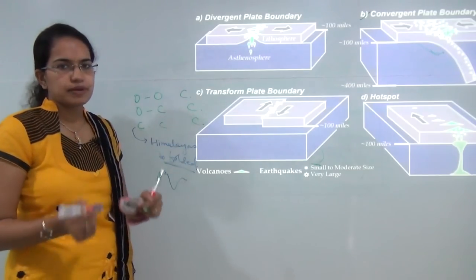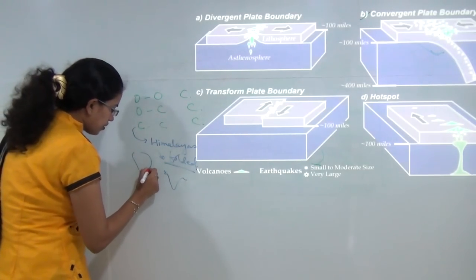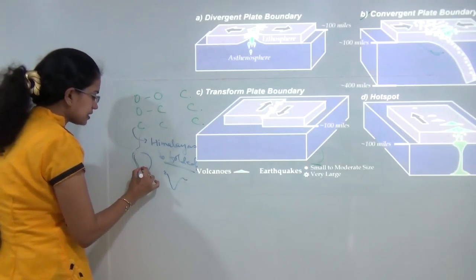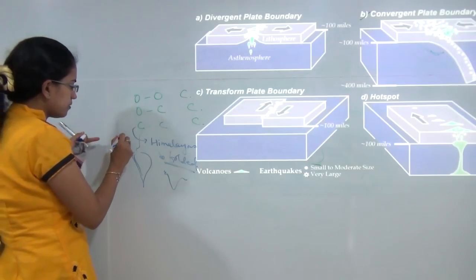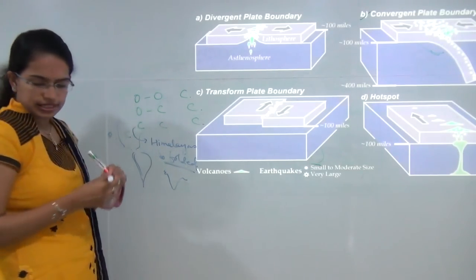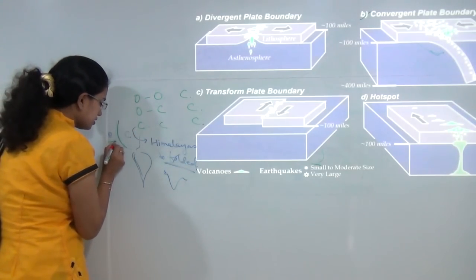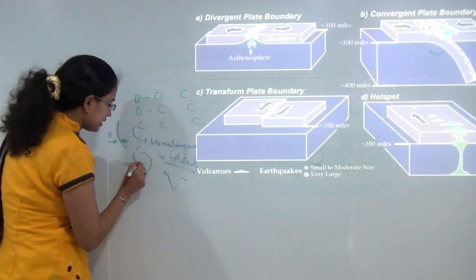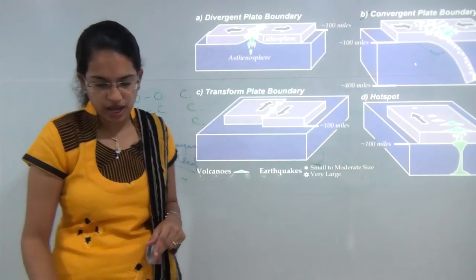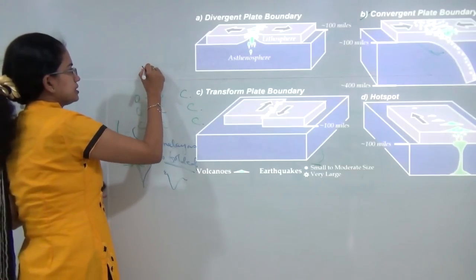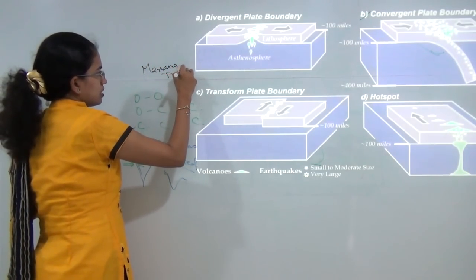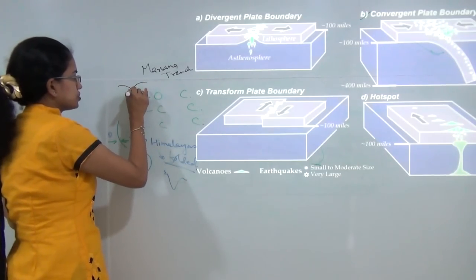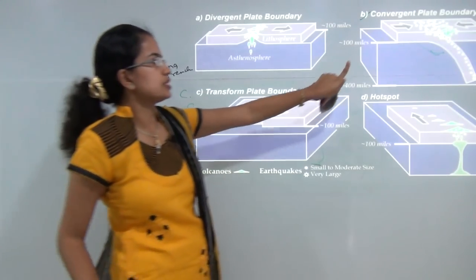If I talk about ocean-continent convergence, the best example would be the Andes and the Rockies. South America has the Andes and North America has the Rockies, both formed towards the coastal area where the ocean region converges onto the continental region. Finally, ocean-ocean convergence is exemplified by the Mariana Trench in the Pacific, which is a trench formed due to ocean-ocean convergence.